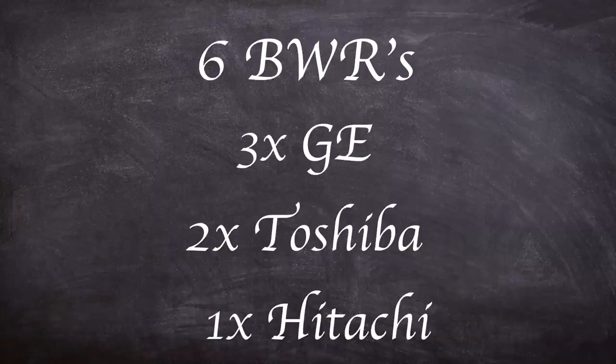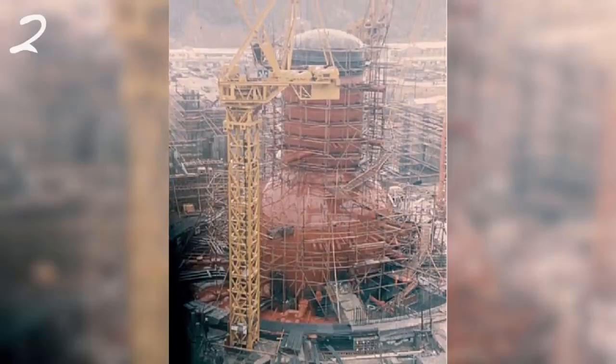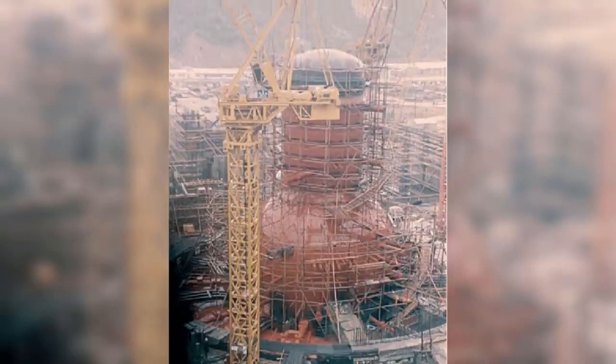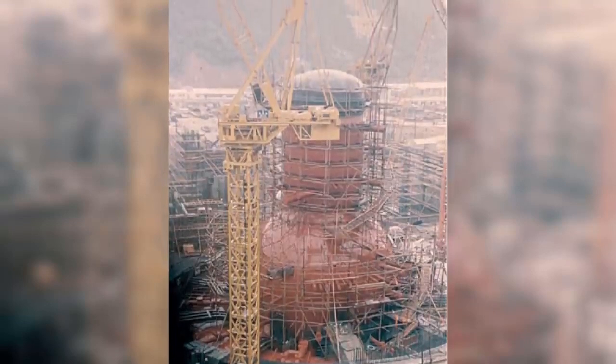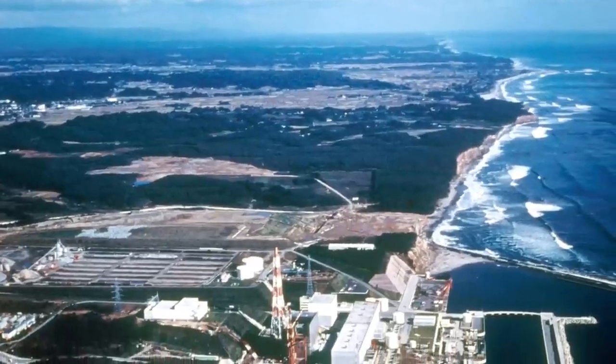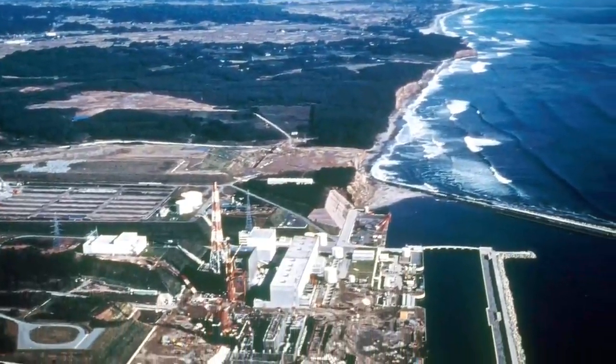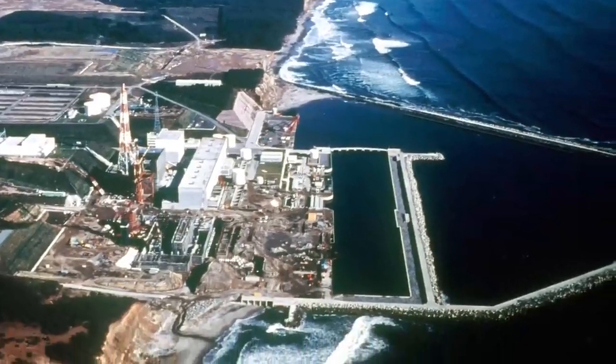Construction on the site began in 1967 on Unit 1, with its commercial operation beginning in 1972. For the next seven years, the remaining five units came online with Unit 6 commissioned in October 1979.